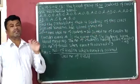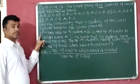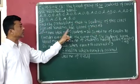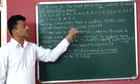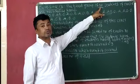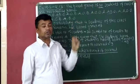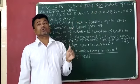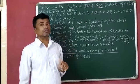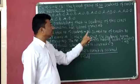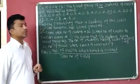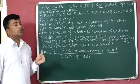Now we will discuss the solution. Here, total number of students is equal to 30. So total number of trials is equal to 30.